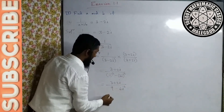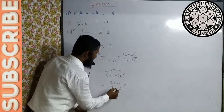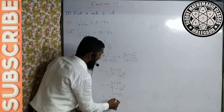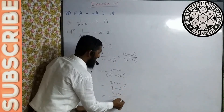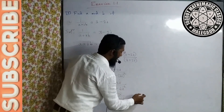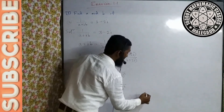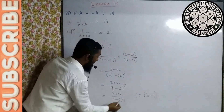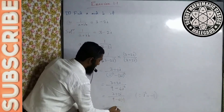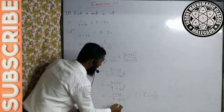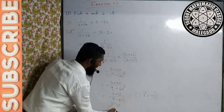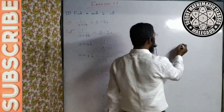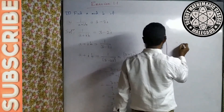Aapka yeh rahega: 3 plus 2i divided by 9 minus 4 i square. i square ki value minus 1 hai — since i square is minus 1. Hum yeh parhte hain ki imaginary unit number ka square minus 1 hota hai. Denominator mein hoga: 9 minus 4 into (−1) = 9 plus 4 = 13.